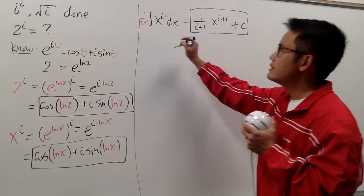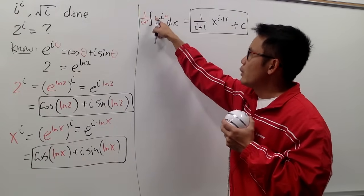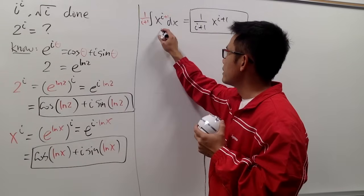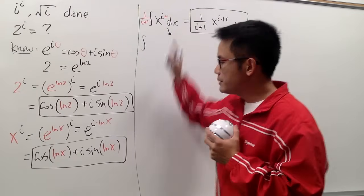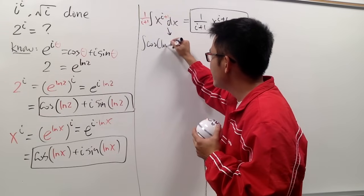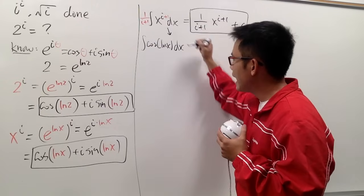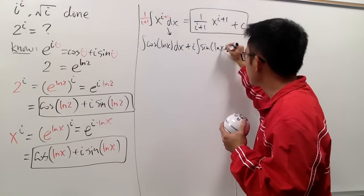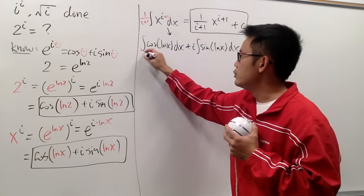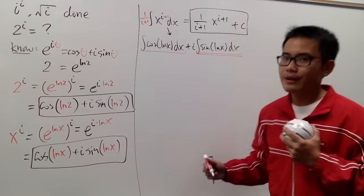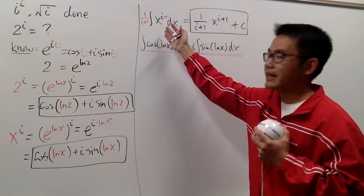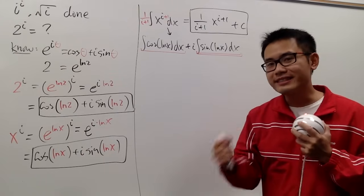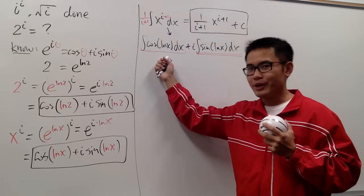The original integral of x to the i power dx is pretty much saying we're integrating the first part, cosine of ln x, plus i times the integral of sine of ln x dx. This contains the real part and the imaginary part. To deal with this, we can look back at our answer: 1 over (1 plus i) times x to the (i plus 1) power, which we can write as x to the first power times x to the i power.